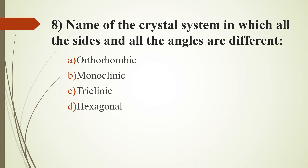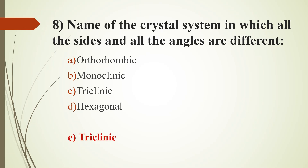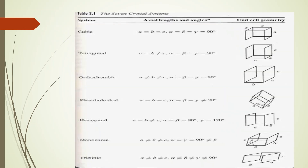Eighth question. Name of the crystal system in which all the sides and all the angles are different: Option A, Orthorhombic; Option B, Monoclinic; Option C, Triclinic; Option D, Hexagonal. Answer is Option C, Triclinic. In the seven crystal systems: Triclinic — all sides and all angles are different; Cubic — all sides and all angles are the same. Other systems include Tetragonal, Orthorhombic, Rhombohedral, Hexagonal, and Monoclinic.